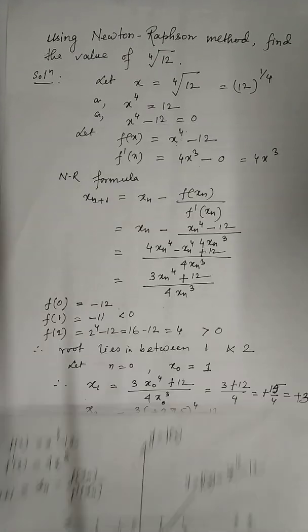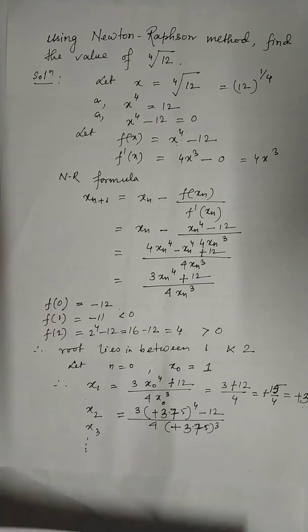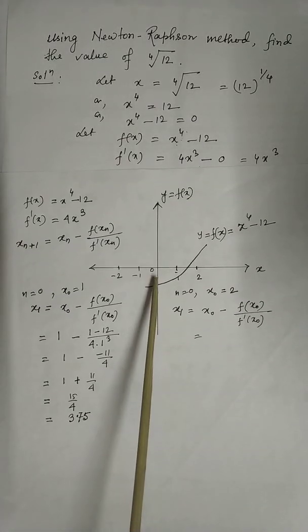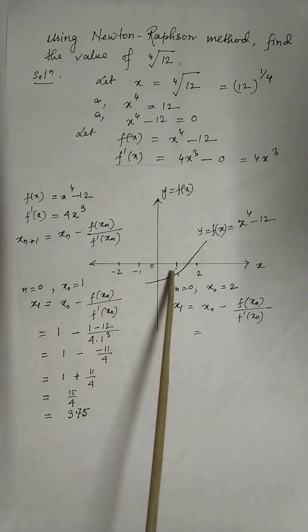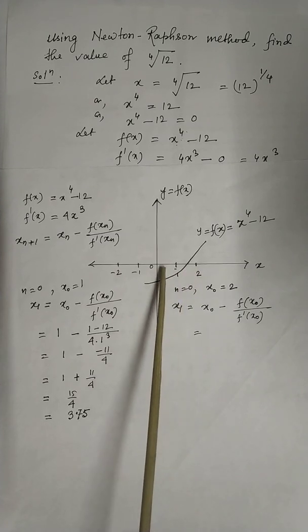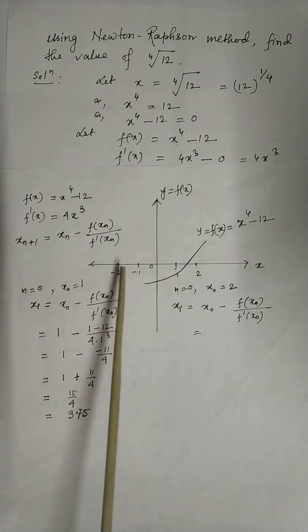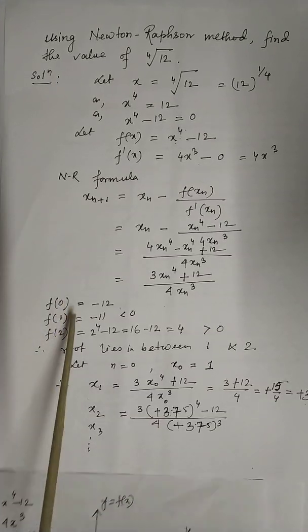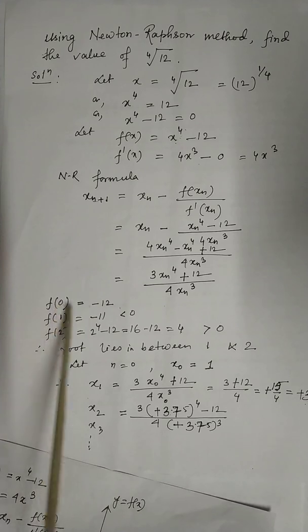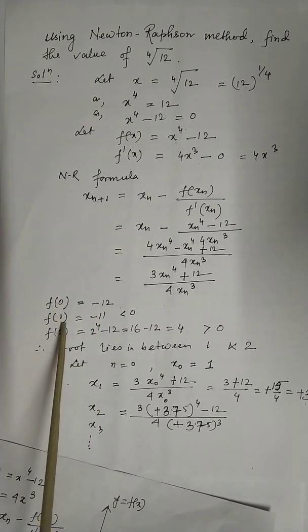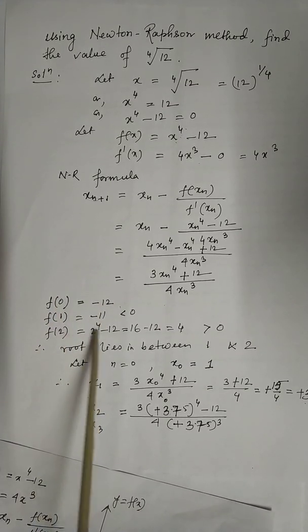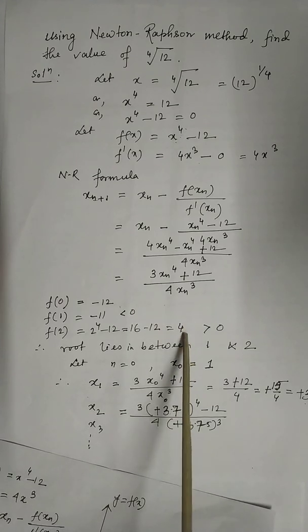In this case, generally we first take the positive values of x. In some questions, you have to take negative values to find the interval. So in this question, let us start from 0. At 0, the functional value is negative. At 1, the functional value is negative. At 2, the functional value is positive.